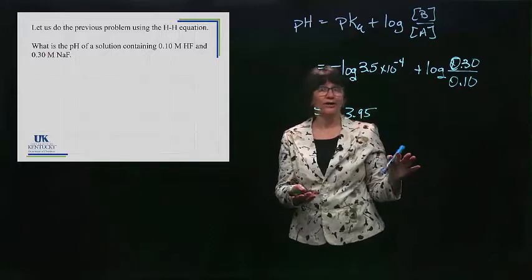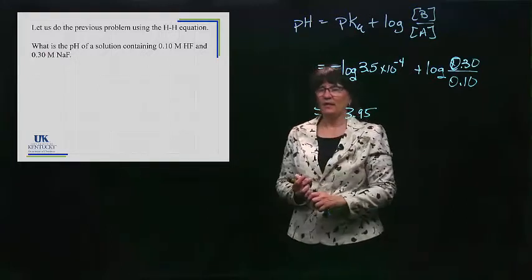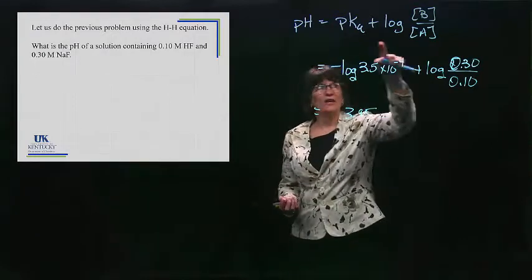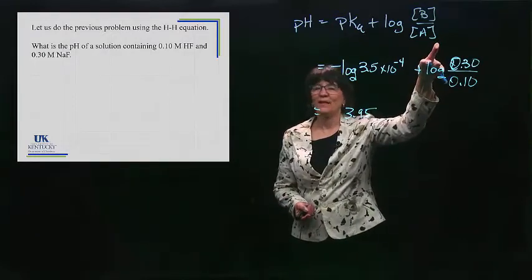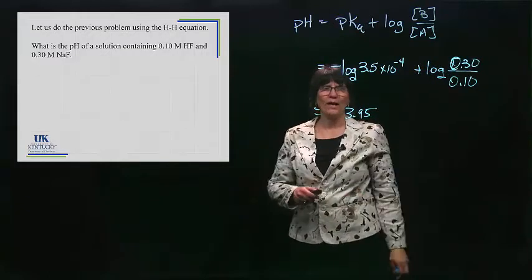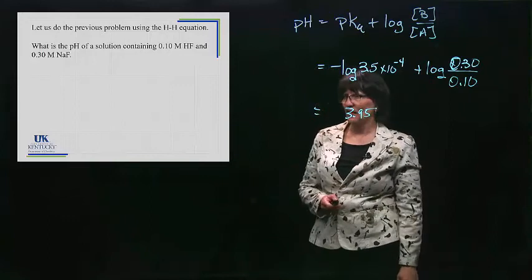And when we look at the problem, the base is the sodium fluoride. The fluoride is actually the base. And that was the .30, 0.30 divided by 0.10. I plug that all into my calculator. And guess what? I get 3.95. Okay. A lot less work than setting up the table. So what did I say? It's disadvantage is you've got to memorize an equation. It's advantage is if you're dealing with a buffer, it's a much, much quicker way of calculating the pH of that solution.